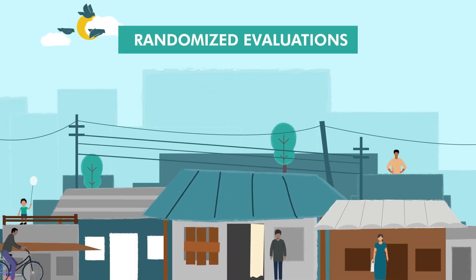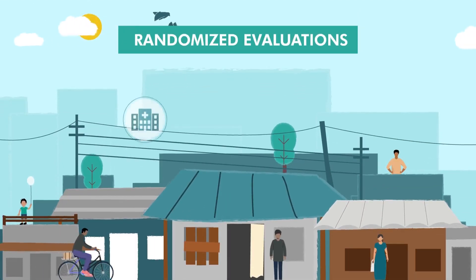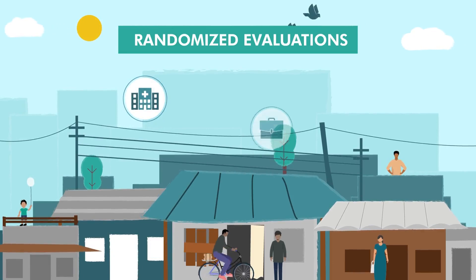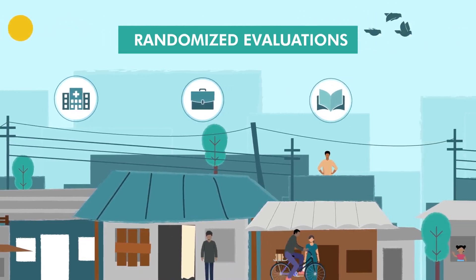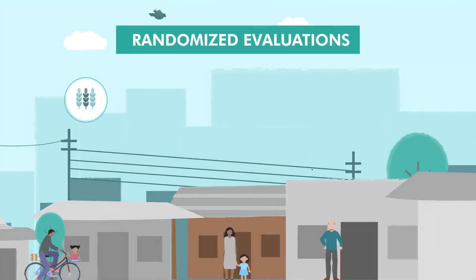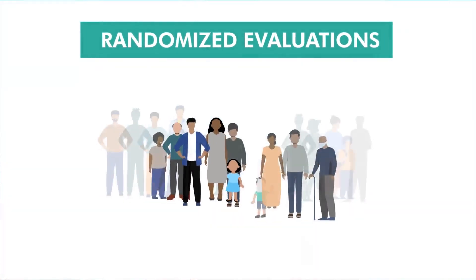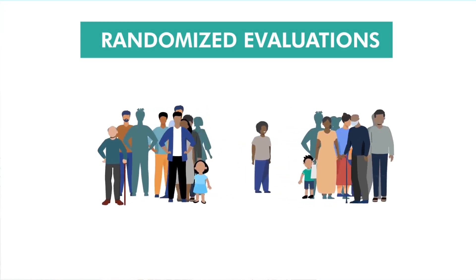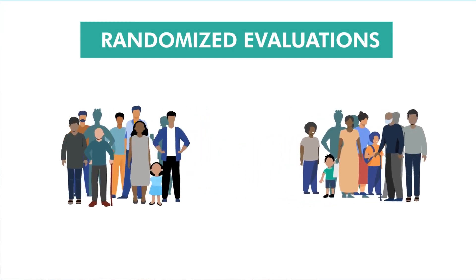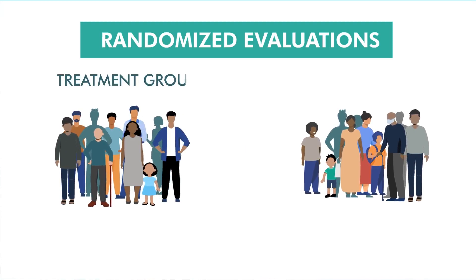Randomized evaluations can help answer these questions by identifying the impacts of a policy or program on the people and communities they're designed to serve. In a randomized evaluation, study participants or groups of participants are randomly assigned to a group that participates in a program — a treatment group — and a group that does not participate — a comparison group.